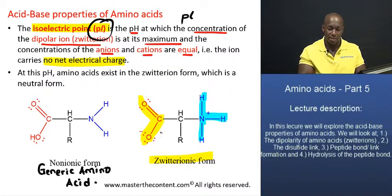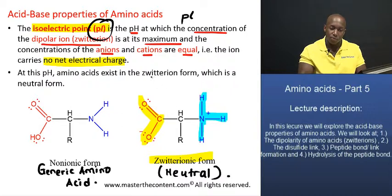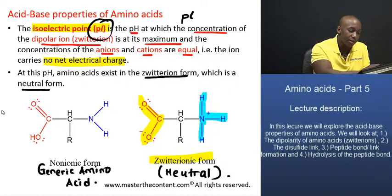So these two charges will cancel each other out. And a zwitterion, or this zwitterionic form, will be relatively neutral. Okay, so the zwitterion is a neutral species, and that's what you need to take away from the slide.